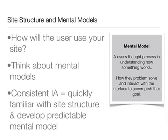Since there are different types of hierarchies and different ways to organize your site's information, it is important to think about the site structure in terms of how the user will use your site. Think about the user's mental models. A mental model is a user's thought process in understanding how something works — it's how they problem-solve and interact with the interface to accomplish their goal. Additionally, if you have a strong, consistent IA, the user should be able to use a mental model to predict how to use the site as they become familiar with the site's structure.